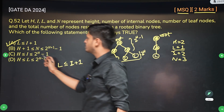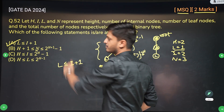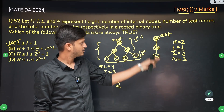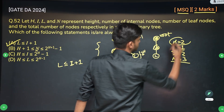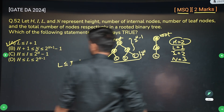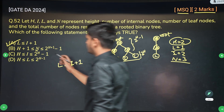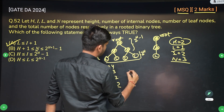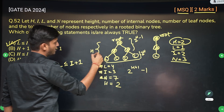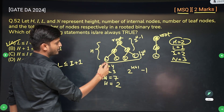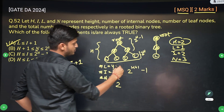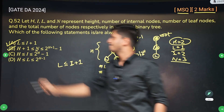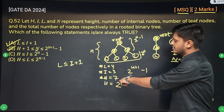The second option states that the total number of nodes is always between h plus 1 and 2^(h+1) minus 1. The minimum is h plus 1, achieved in a chain. The maximum is 2^(h+1) minus 1, achieved in a complete binary tree. For example with h equal to 2, total nodes is 2^3 minus 1 equals 7. So the second option is also correct.